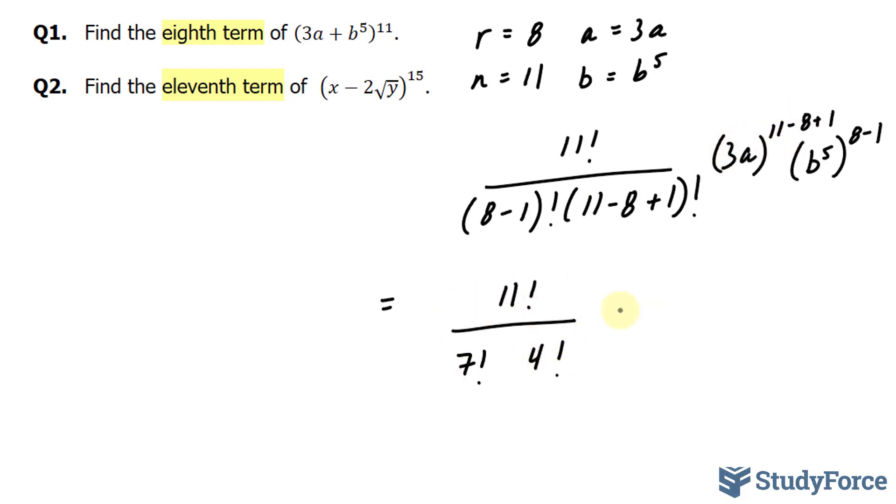Over here, we have 3a to the power of 11 minus 8 plus 1, so that's 4. And over here, we have b to the power of 5 raised to the power of 7.